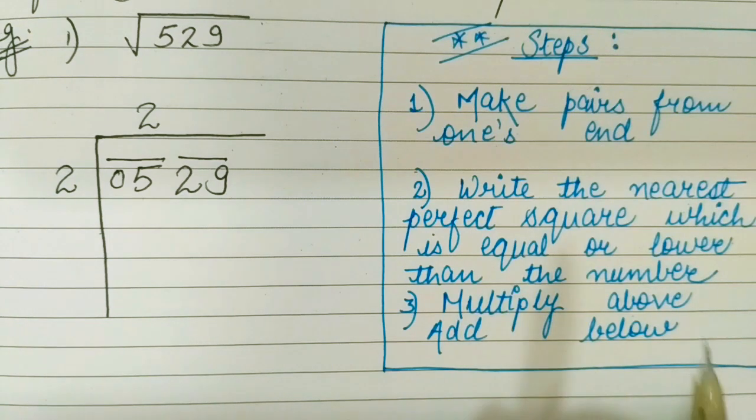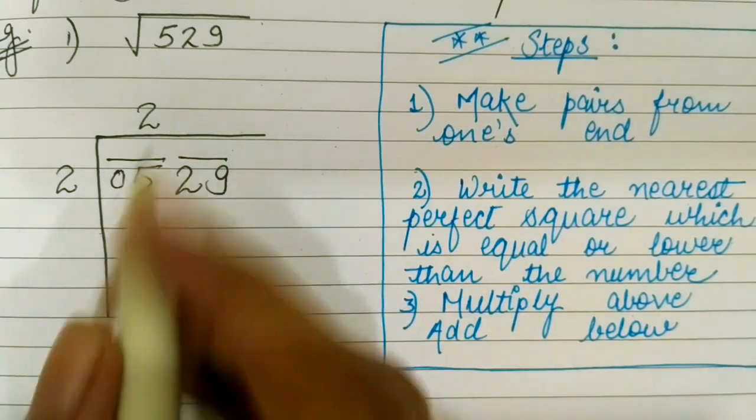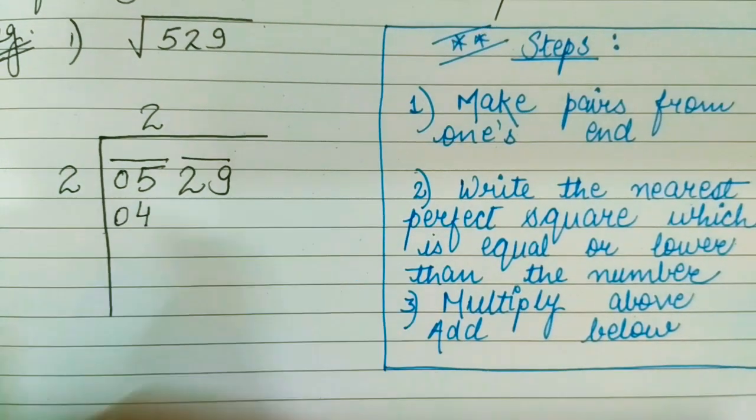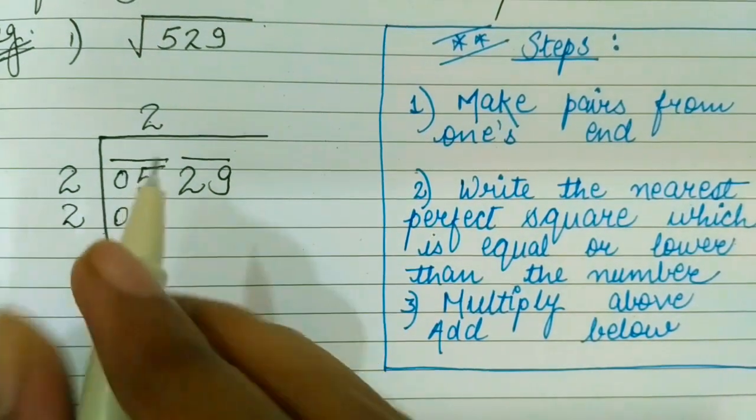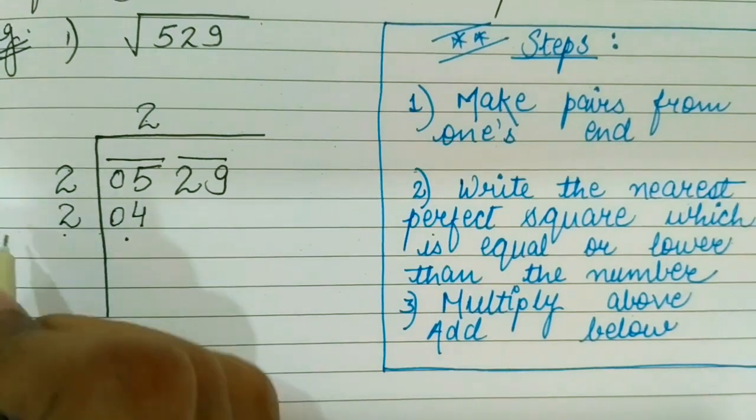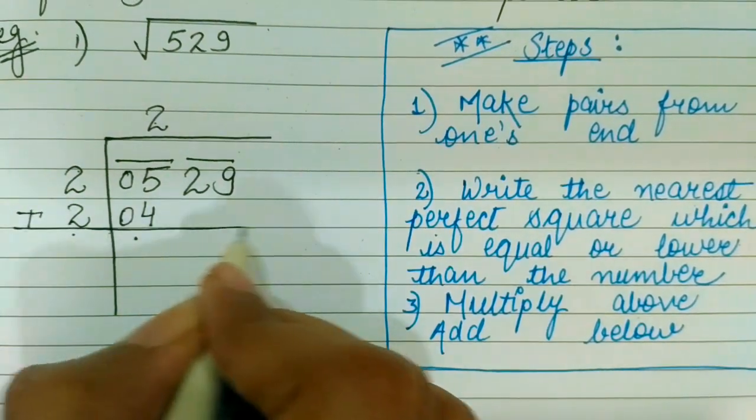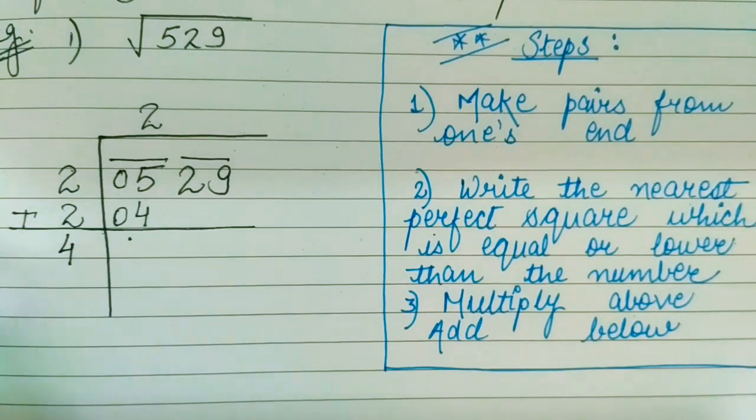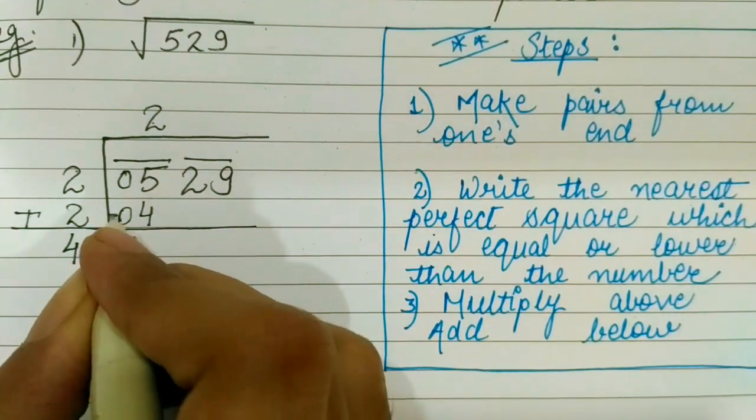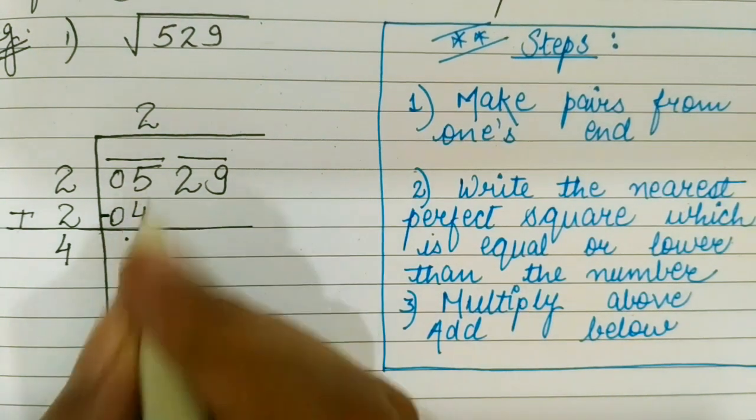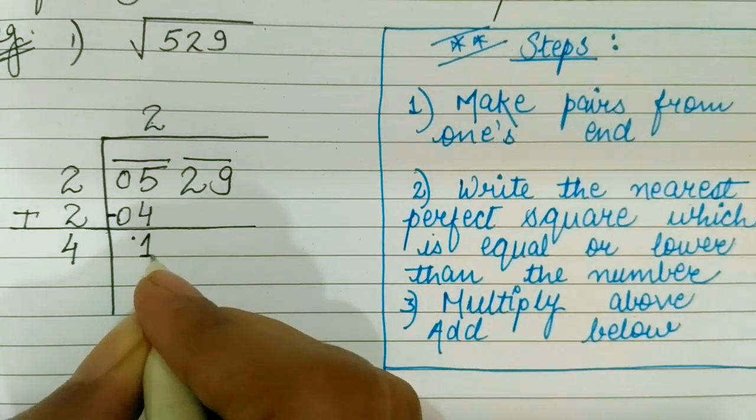Next step is multiply above and add below. 2 into 2 will make 4. Adding these 2 will make it 4. Next step is subtract these 2. 5 minus 4 will make 1.